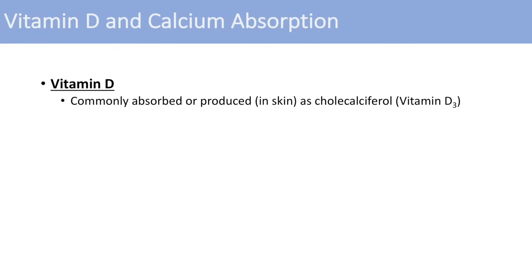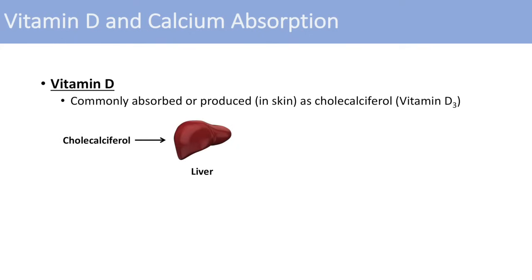Now this form of vitamin D is not the active form that we require to adequately absorb calcium. When you first absorb calciferol, it needs to undergo a couple of steps to be processed into the active form. Calciferol actually travels to the liver and will become calcifidiol.